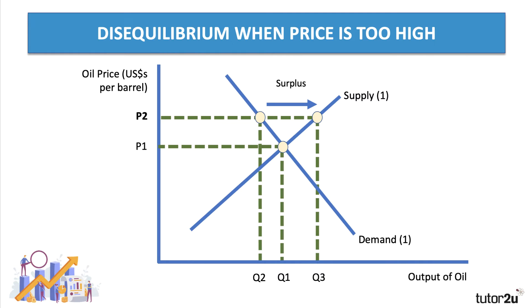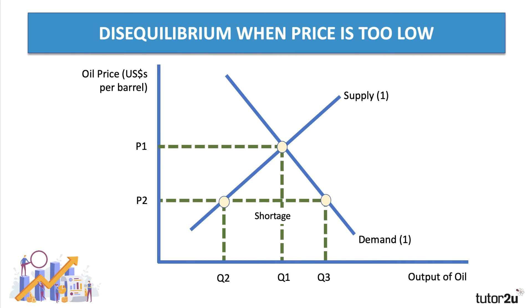Equally, if the price was very low — if the price of oil being traded was P3 — then there would be a relatively high level of demand. People would think oil is a relatively cheap source of energy. And also, at low prices, there's less incentive, less commercial incentive to extract oil. You're getting a low price in terms of US dollars per barrel. So P1 is the equilibrium market clearing price.